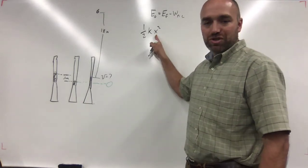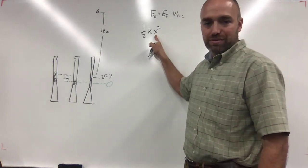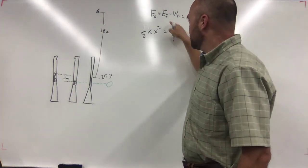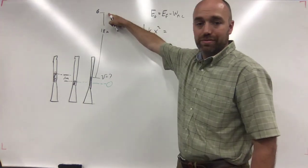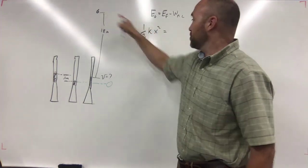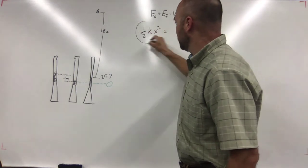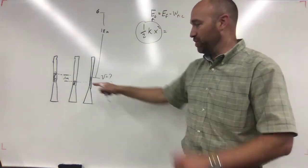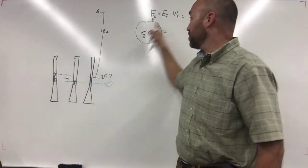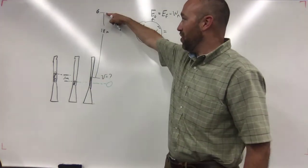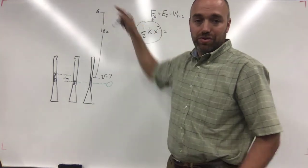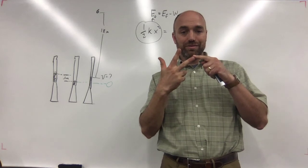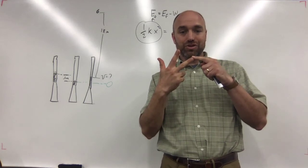That's on your equation sheet — it's just the potential energy of a spring, where x is how much the spring has been compressed. Now in the final situation — up here — that is energy final. We're going to ask the same three questions. Is the ball moving at the top?